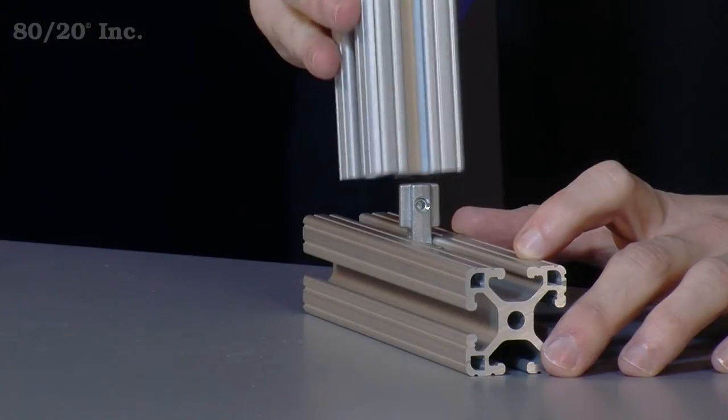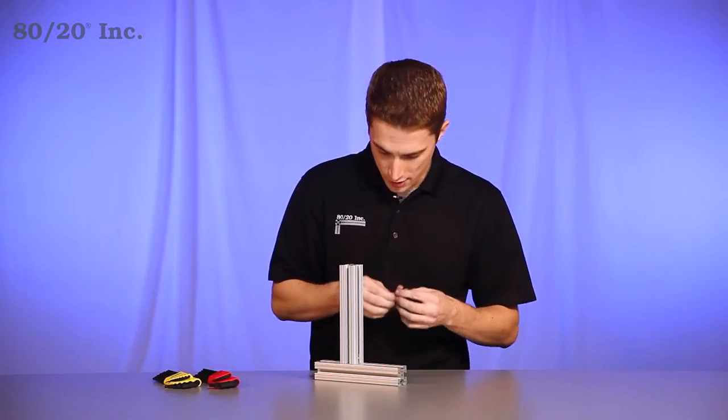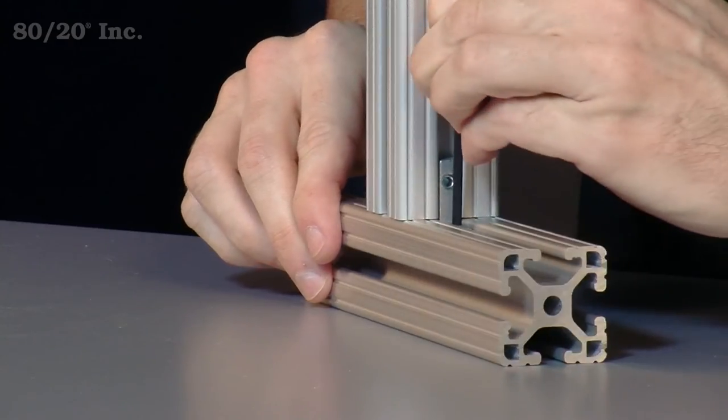Take your other bar and slide it over the connector. We're going to take our wrench from there and tighten down the two screws.